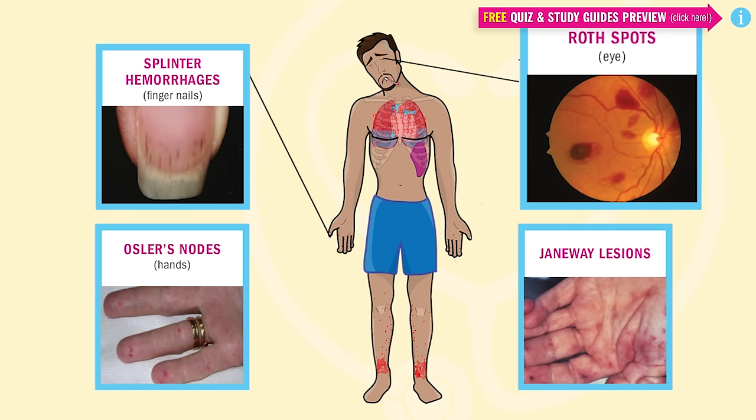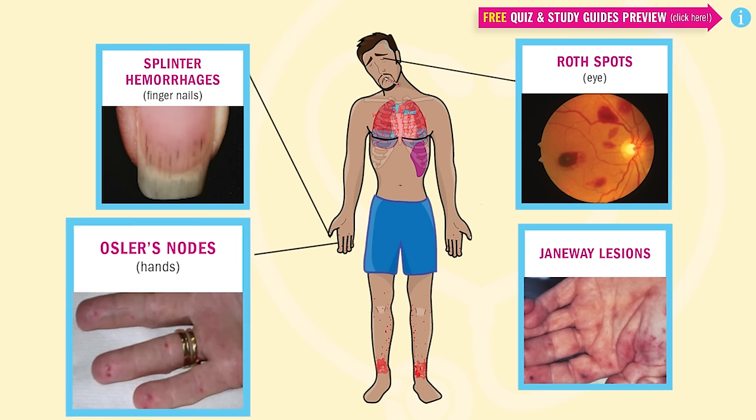Test tip number two is Roth spots in the eye, known as retinal hemorrhages. It's from the body's immune response to the infection. Correlate the R in Roth to the R in retina — it's an eye for a retinal hemorrhage. Next is Osler's nodes — these painful red raised lesions are found on the hands and feet, and are also an immune response as the body tries to fight the infection.